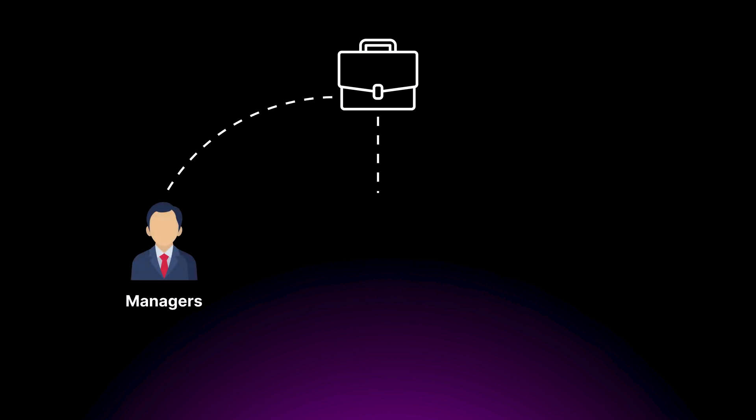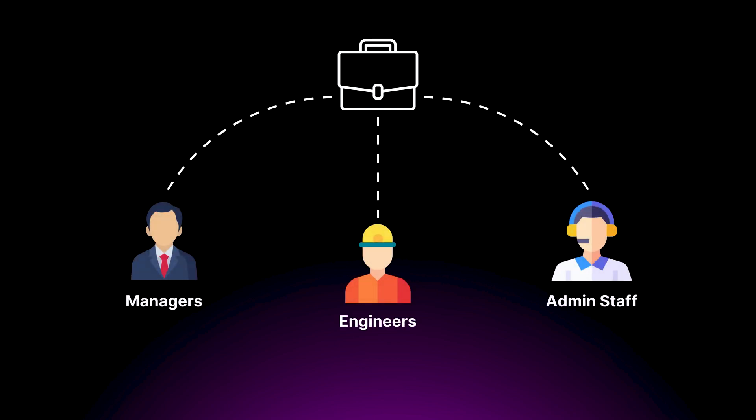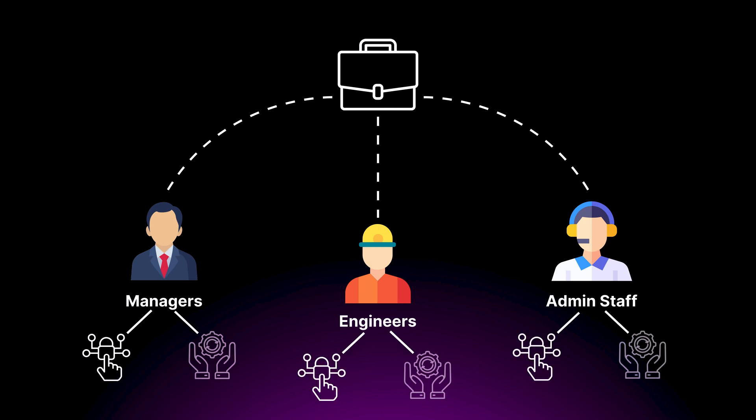Another key aspect of IAM is using role-based access control. This allows you to define roles with specific permissions and assign users to those roles — like having different job functions in the building: managers, engineers, and admin staff, each with their own specific areas of access and responsibilities. The key is to be thoughtful and deliberate in how you set up your IAM permissions. Don't just give everyone admin access because it's easier — that's also very lazy. Take the time to define roles and permissions that align with your business needs and security best practices.